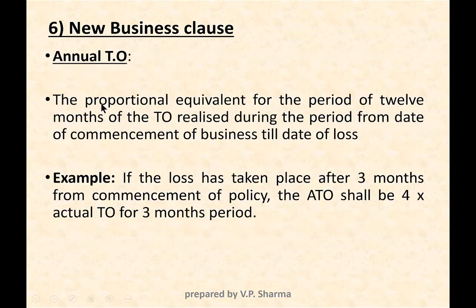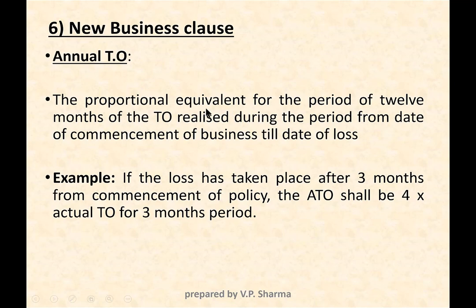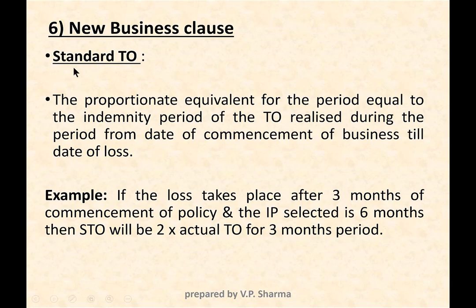Annual turnover is revised to mean: the proportional equivalent for a period of 12 months of the turnover realized from the date of commencement of business till the date of loss. For example, if loss occurs three months after commencement, the annual turnover shall be four times the actual turnover for those three months — multiplying by four gives the proportionate equivalent of 12 months.